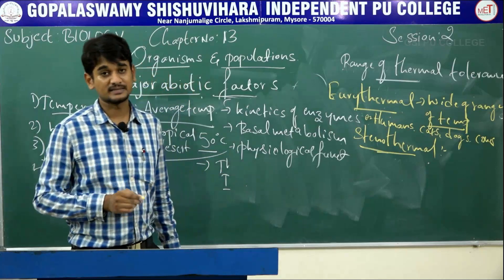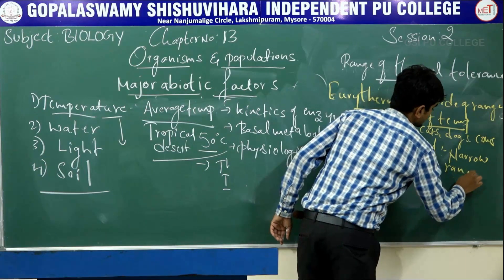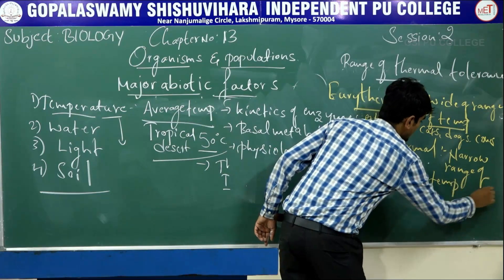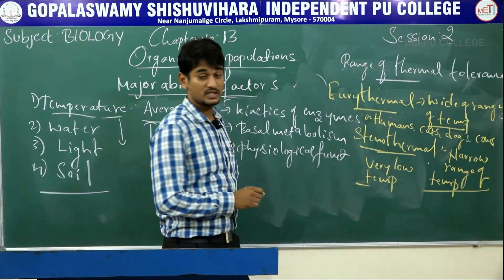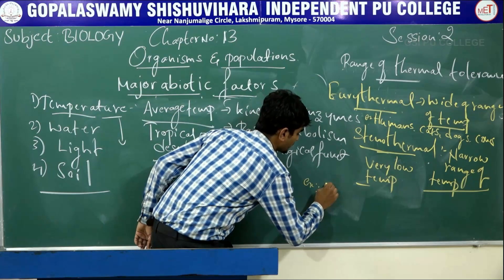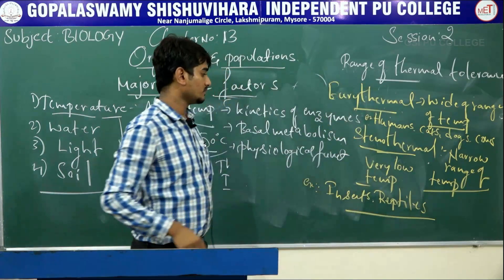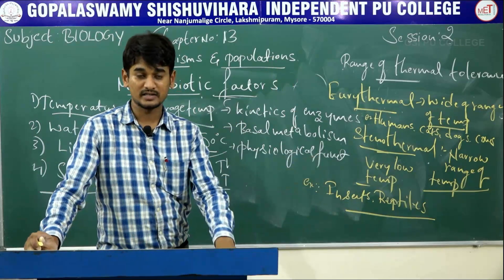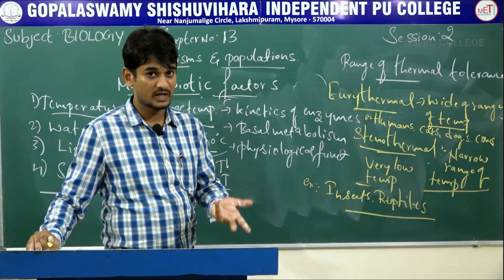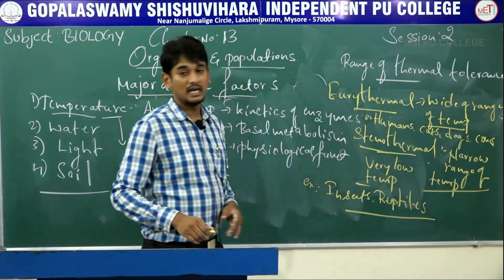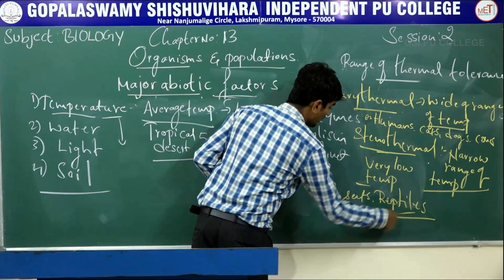Stenothermal organisms are those that can tolerate only a narrow range of temperature, or very low temperatures. Examples of stenothermal organisms include corals, some insects, and some reptiles. To summarize: eurythermal organisms tolerate a wide range of temperature — examples include humans, cats, dogs, and cows. Stenothermal organisms tolerate only a narrow range — examples include corals, insects, and a few reptiles.